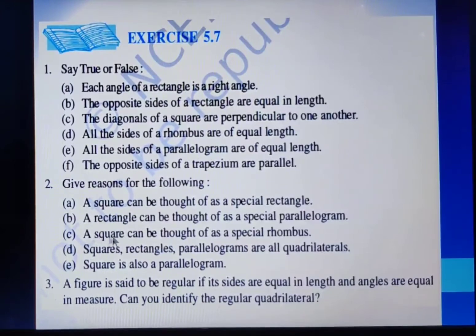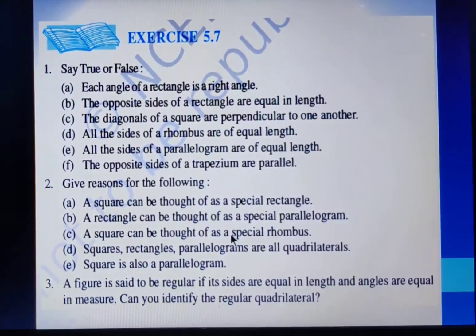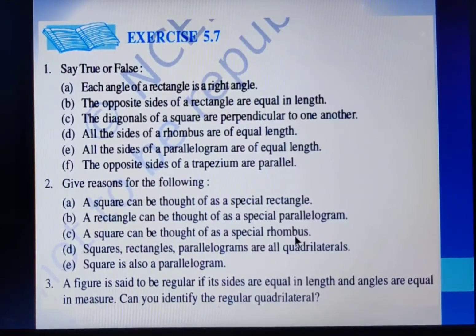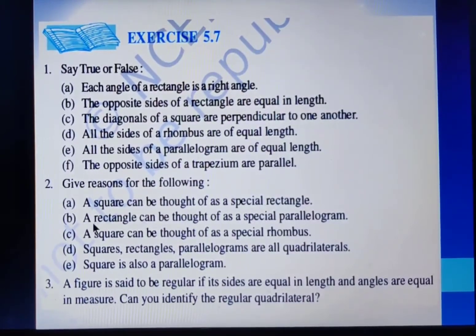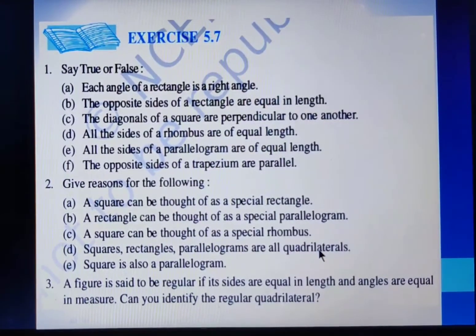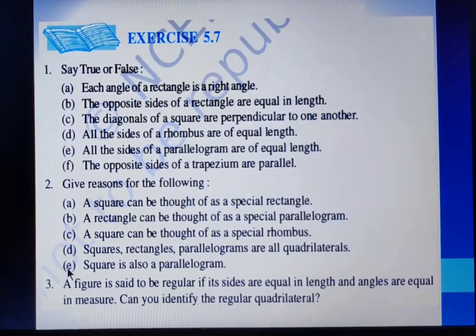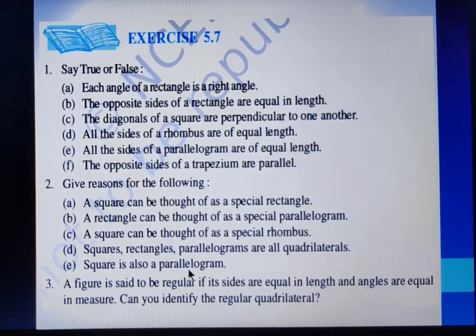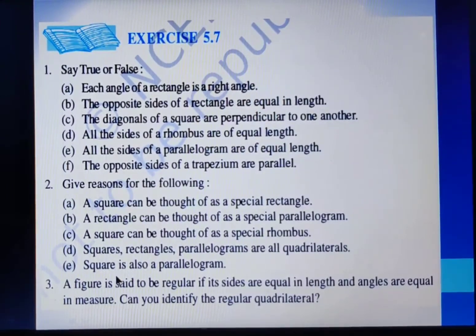Part C: A square can be thought of as a special rhombus — when a rhombus has all the angles equal to 90 degrees, it becomes a square. Part D: Squares, rectangles, and parallelograms are all quadrilaterals as they have four sides. Part E: A square is also a parallelogram because in a square, opposite sides are equal and parallel.